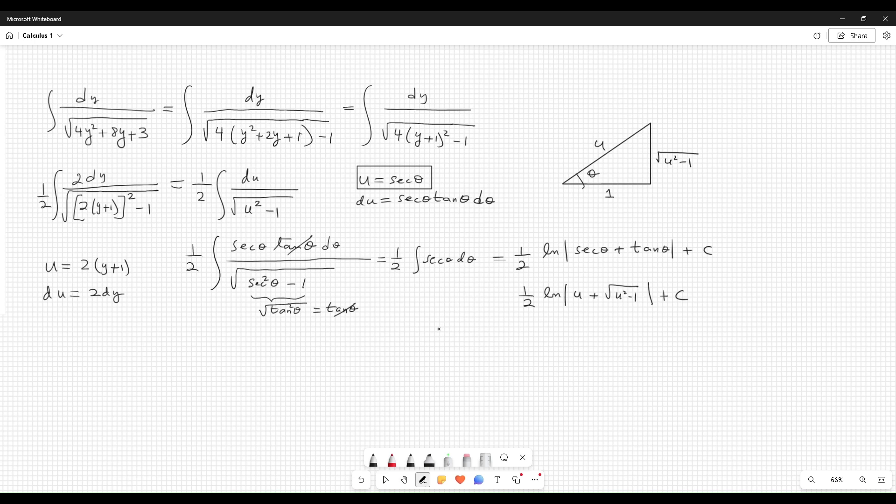This one here. So we have one-half natural logarithm of absolute value of u, which is 2y plus 1, plus the square root - get the expression inside. The square root of 4y squared plus 2y plus 3, plus C. This is the answer.